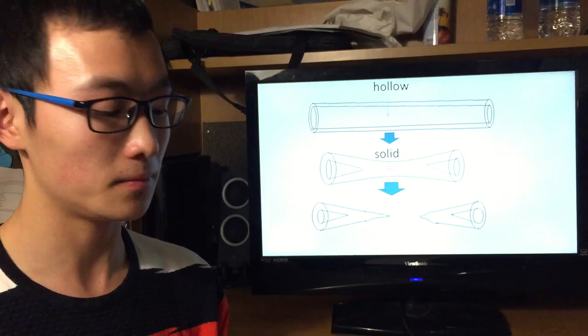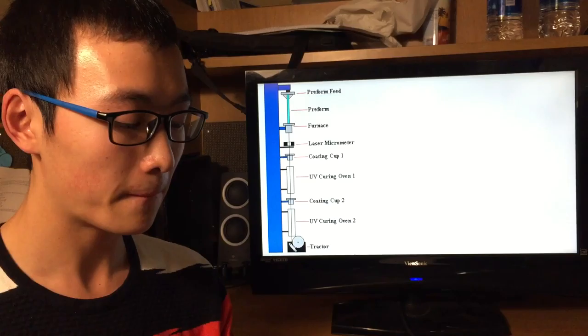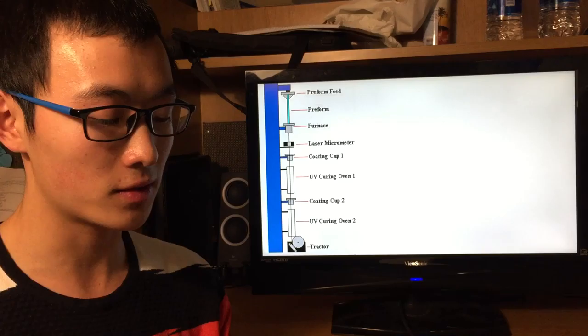Step two is to draw optical fiber from the preform. Here's the tower that supports various devices used in this fiber drawing process. First, the finished glass preform is installed at the top of this tower.